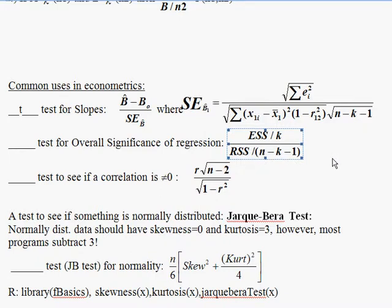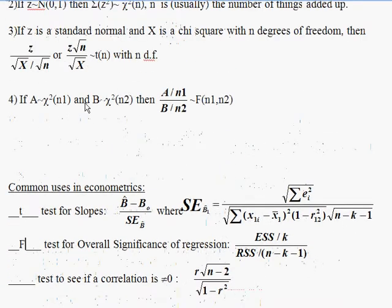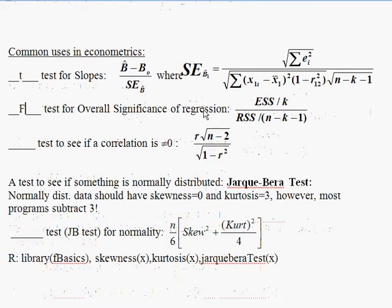Pause and think about it. It's an F — an F with two degrees of freedom: k in the numerator and n minus k minus 1 in the denominator. It fits the pattern of a chi-square divided by degrees of freedom over another chi-square divided by degrees of freedom. So now you know why we use an F-test there.